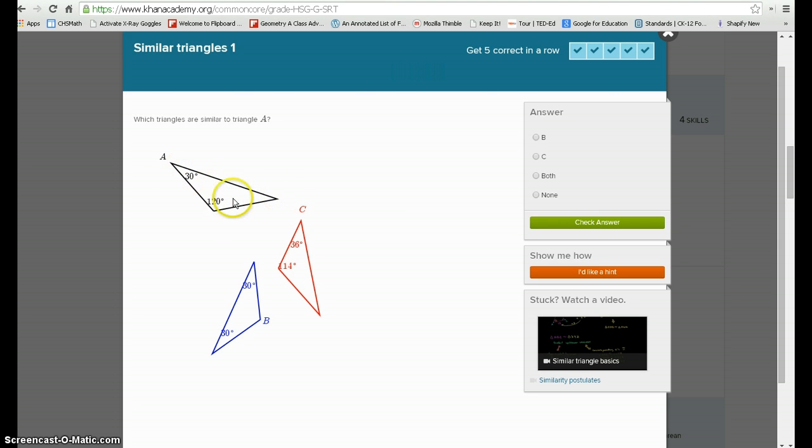So this is a 30, 30, 120. That's the measure of these angles. And that just doesn't match up. Over here we have 30 and 30. And we know if we add up to 180, we would need 120 degrees. So B is our similar one.